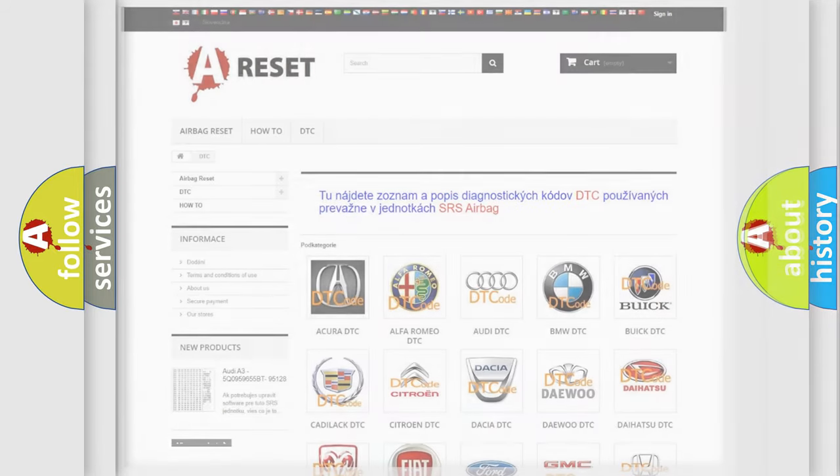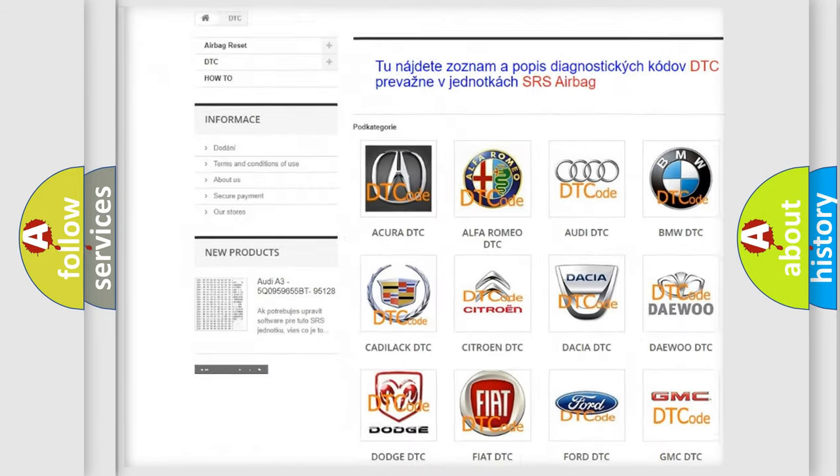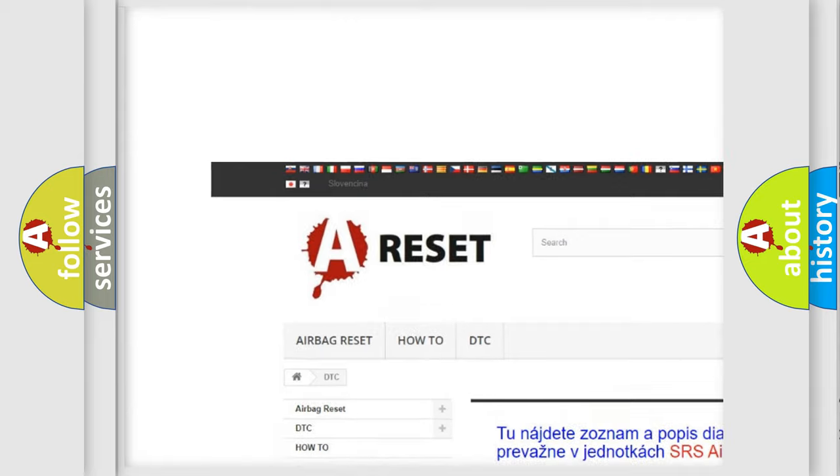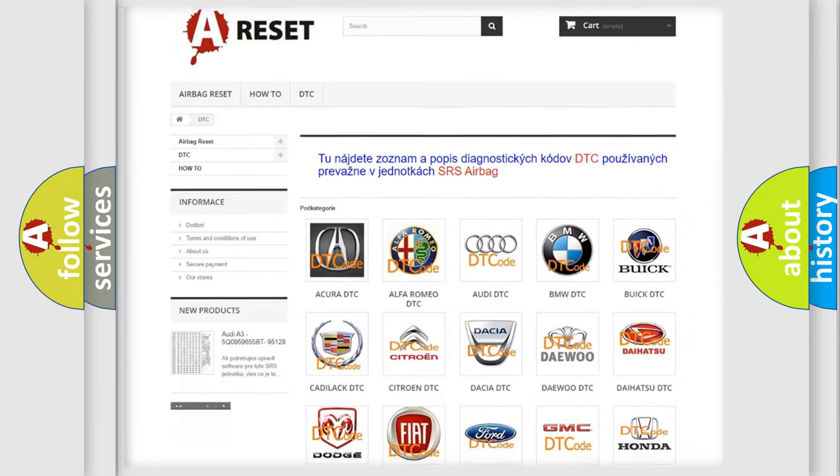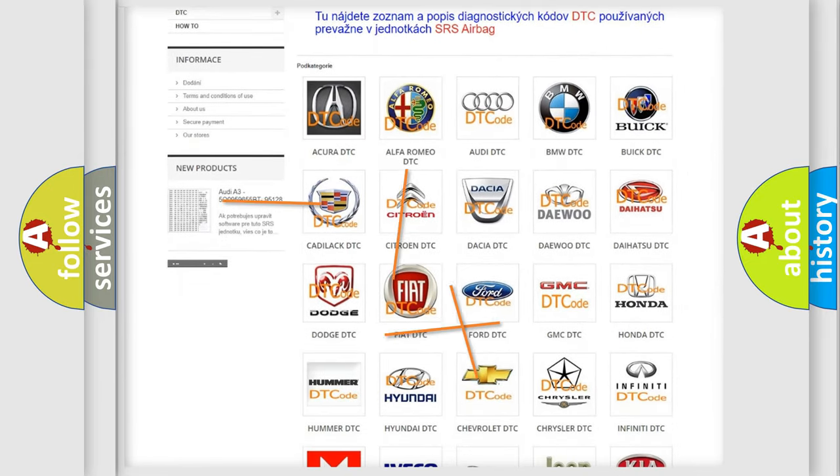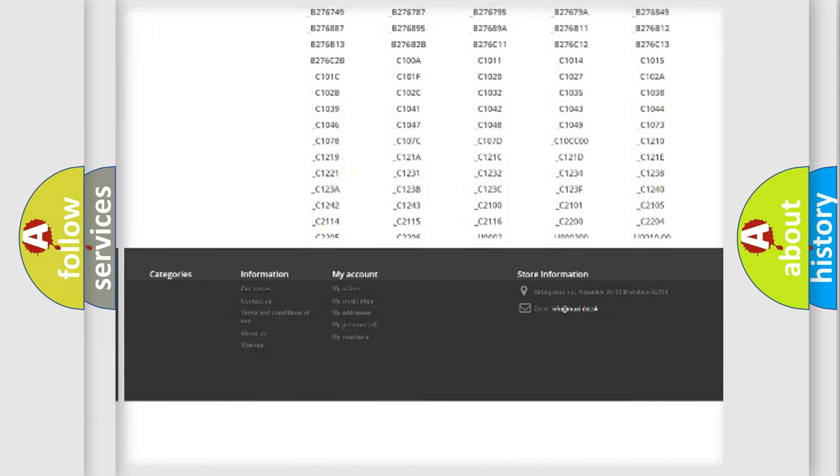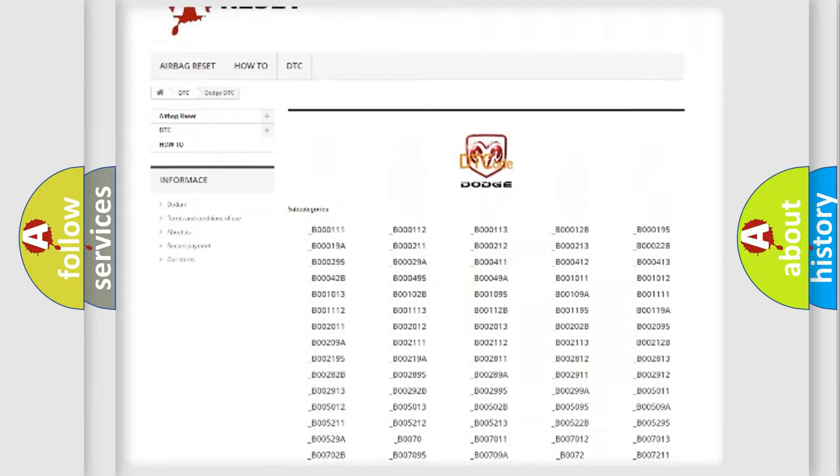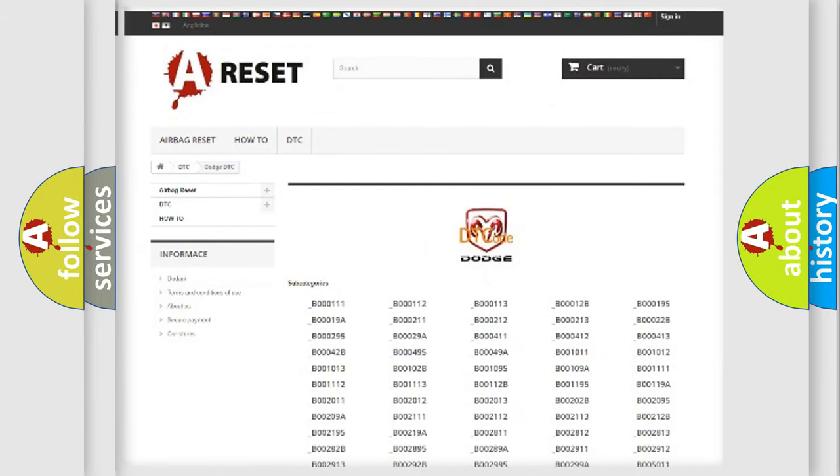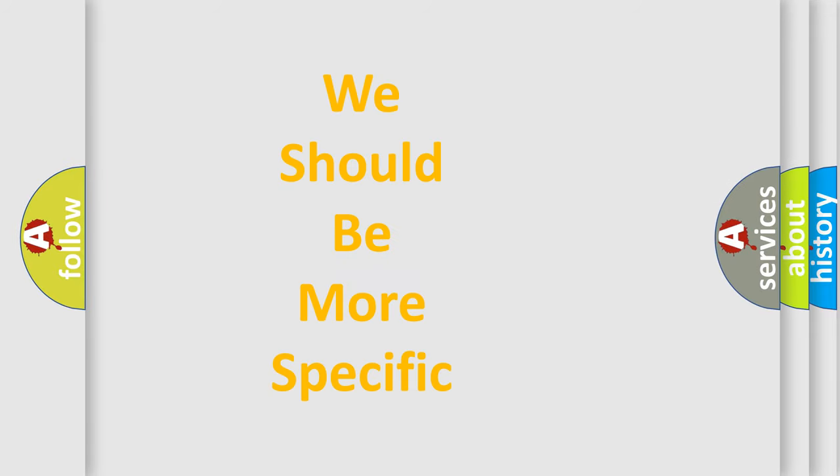Our website airbagreset.sk produces useful videos for you. You do not have to go through the OBD-II protocol anymore to know how to troubleshoot any car breakdown. You will find all the diagnostic codes that can be diagnosed in Dodge vehicles, and many other useful things. The following demonstration will help you look into the world of software for car control units.